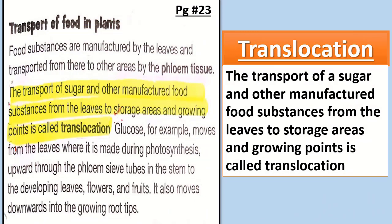Open your page number 23. Here the topic is transport of food in plants. Food substances are manufactured by the leaves and transported from there to other areas by the plant tissues. The transport of sugar and other manufactured food substances from the leaves to storage areas and growing points is called translocation.